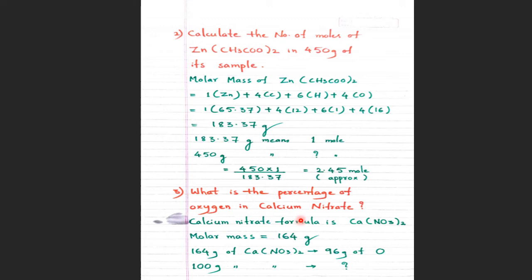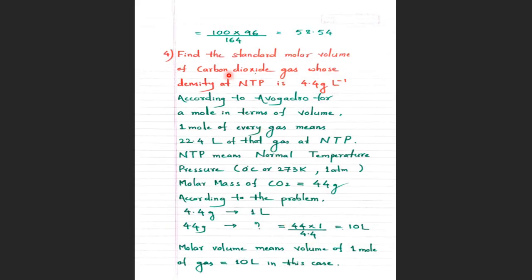Numerical number three: What is the percentage of oxygen in calcium nitrate? Calcium nitrate is Ca(NO₃)₂. Molar mass = 164 grams. In 164 grams of calcium nitrate, there are 6 oxygen atoms (3×2), and one oxygen weighs 16 grams, so 6 oxygens weigh 96 grams. If 164 grams contains 96 grams of oxygen, then the percentage of oxygen = (96/164) × 100 = 58.54%.